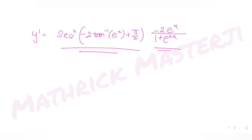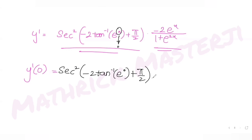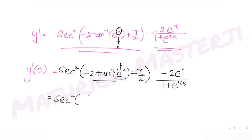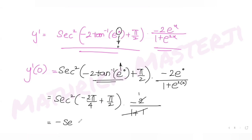Substituting x = 0: the argument becomes -2·tan⁻¹(1) + π/2 = -π/2 + π/2 = 0, so sec²(0) = 1. The factor -2e⁰/(1 + e⁰) = -2/2 = -1. Therefore y'(0) = 1·(-1) = -1.